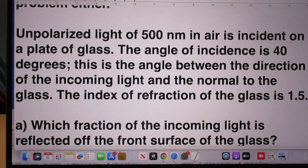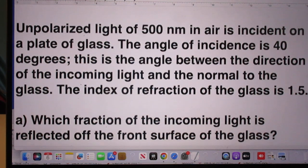Unpolarized light with a wavelength of 500 nanometers in air is incident on a plate of glass. The angle of incidence is 40 degrees. Just to remind you what the angle of incidence is. This is the angle between the direction of incoming light and the normal to the glass. The index of refraction of the glass is 1.5.